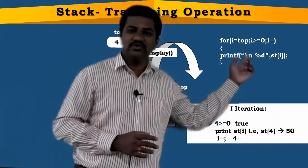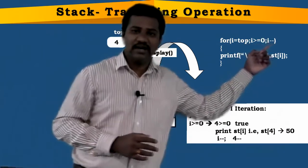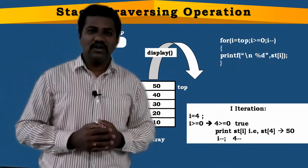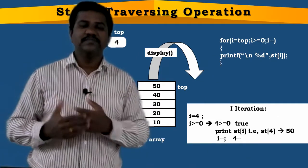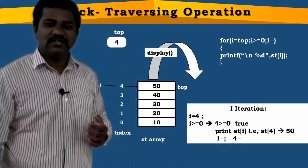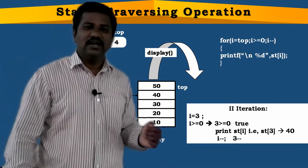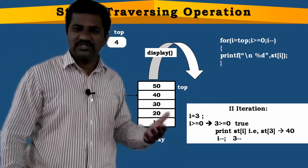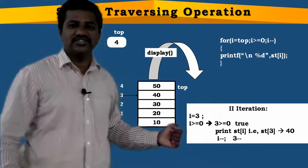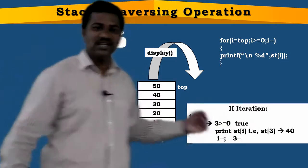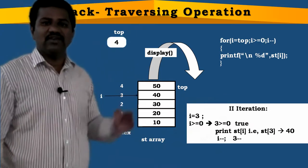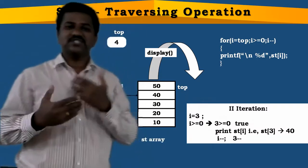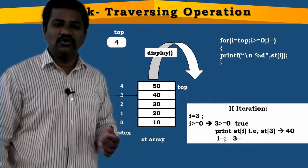After printing 50, i becomes 3. In the second iteration, i=3 and 3 >= 0 is true, so we print st[3] which is 40. Then i-- makes i=2. 2 >= 0 is true, we print st[2] which is 30. Then i-- makes i=1. 1 >= 0 is true, we print st[1] which is 20. After that, 1-- makes i=0.